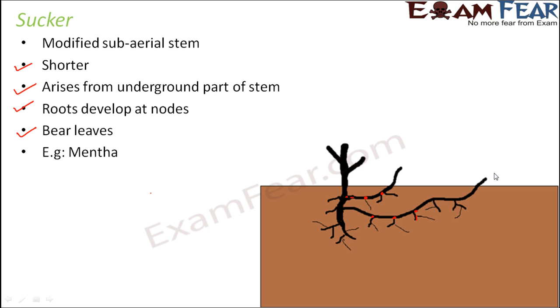Examples of plants where you can see this kind of modified sub-aerial stem are banana, pineapple, and chrysanthemum. These are some of the examples where you see suckers.